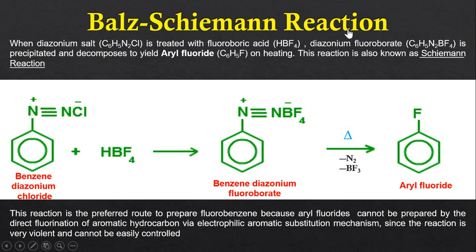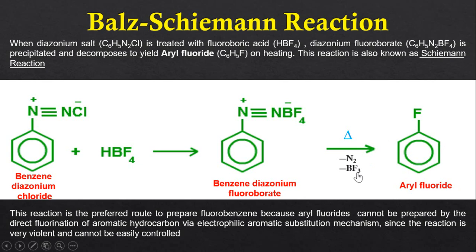In this reaction, the diazonium salt C6H5N2Cl is converted into aryl fluoride. The benzene diazonium chloride is first treated with fluoroboric acid (HBF4) to give benzene diazonium fluoroborate. This intermediate is then further heated to give aryl fluoride — also called fluorobenzene — with the elimination of N2 gas and BF3.